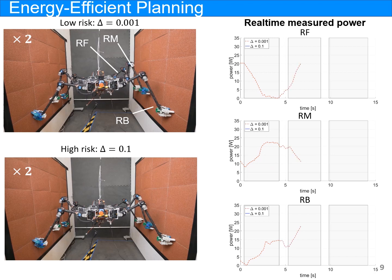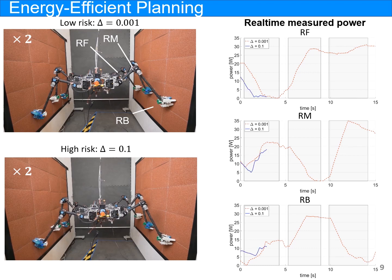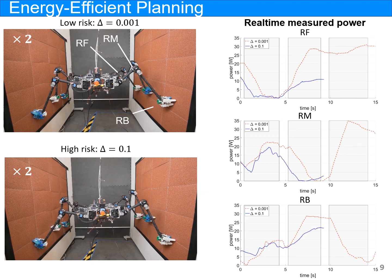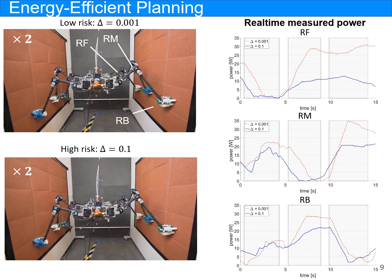The first experiment shows the trade-off variation between the consumed energy and risk. As for robotic climbing, the robot would be able to decrease the consumed energy by betting that the gripper can generate high force by taking a high risk. The robot consumes less energy than with low risk.